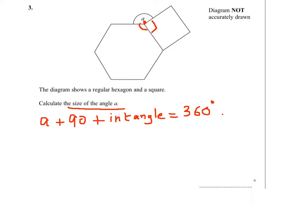Now I need to work out the interior angle. We know that interior angle plus exterior angle equals 180. And the exterior angle in a hexagon is 360 divided by the number of sides, which is 6, so each exterior angle is worth 60.